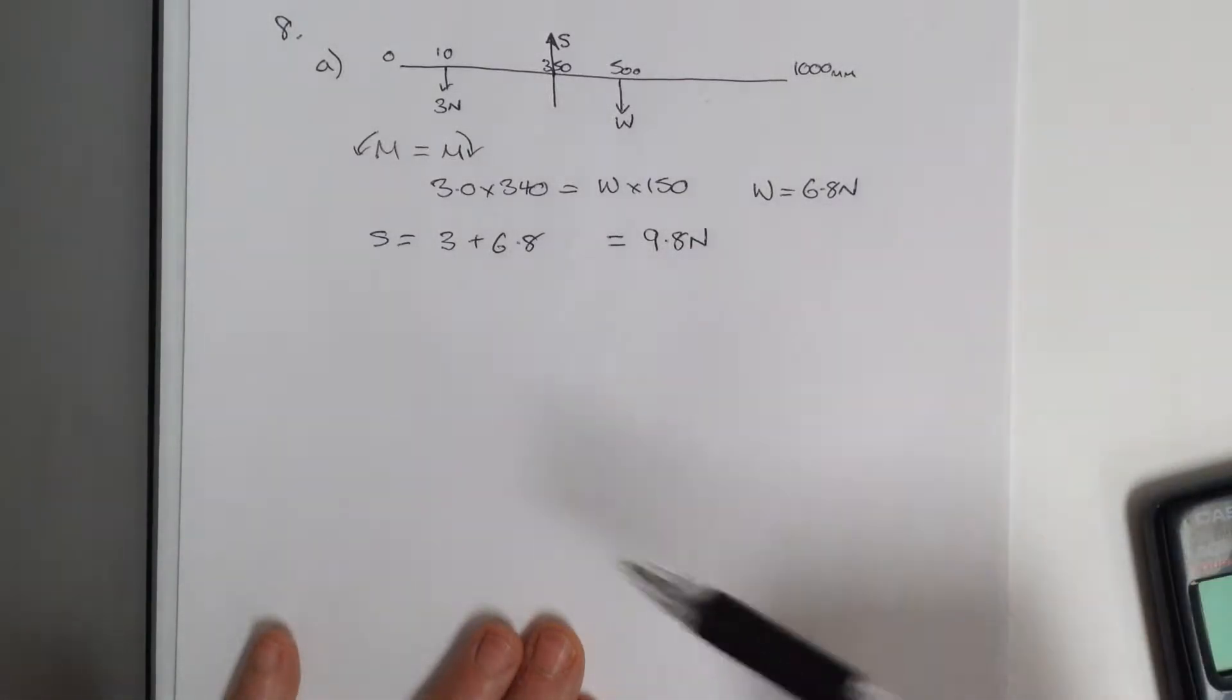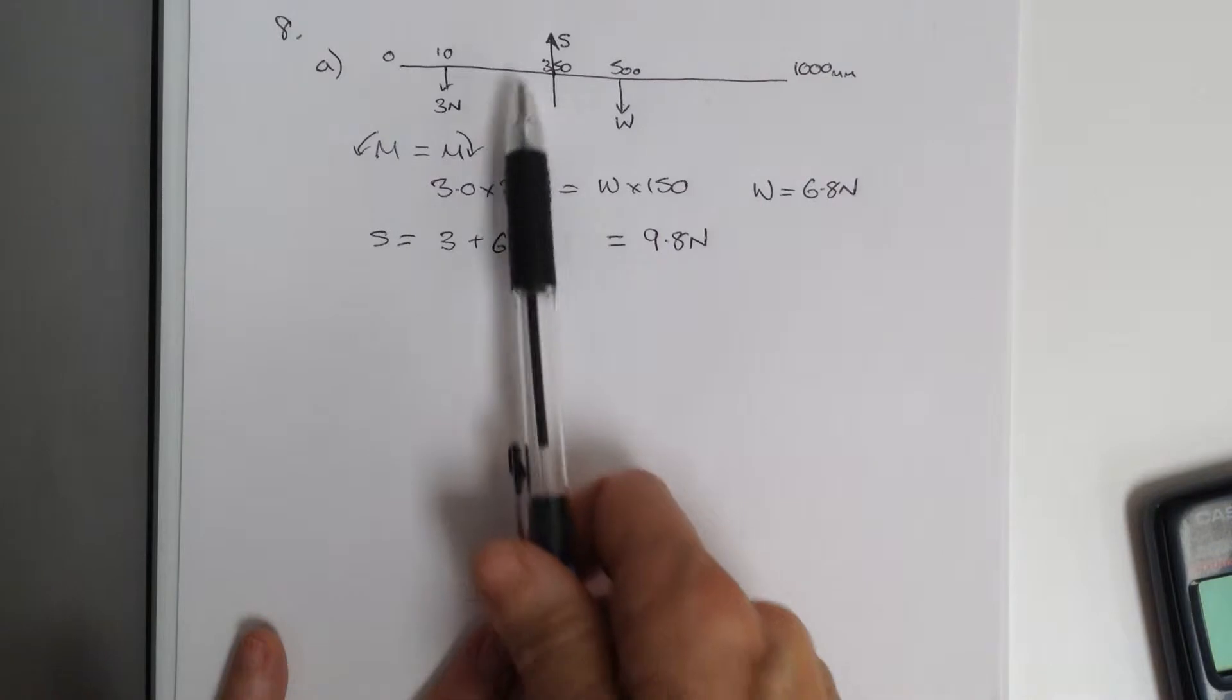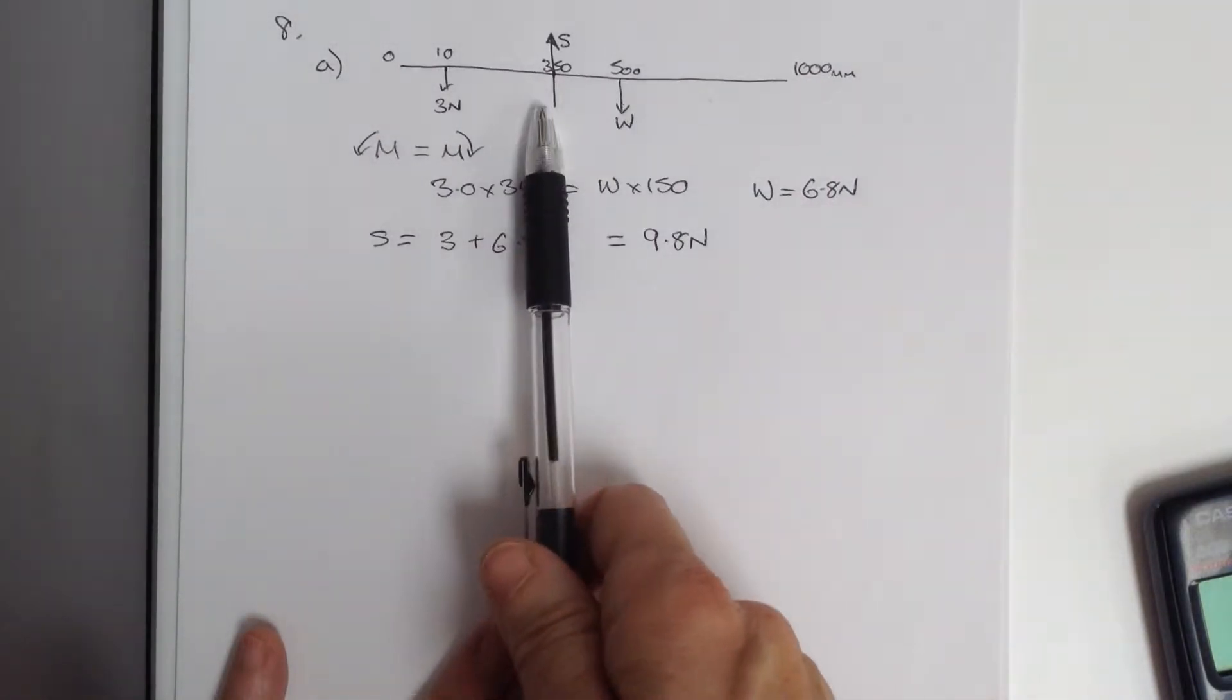Question 8. For question 8, you are balancing a metre rule on a knife edge.